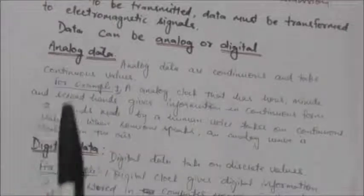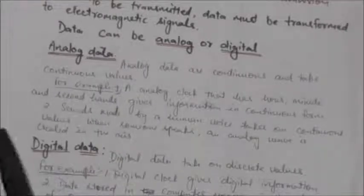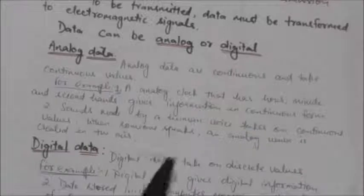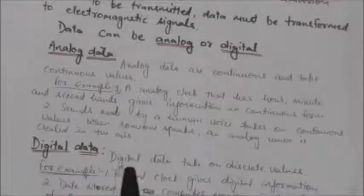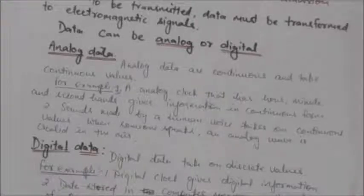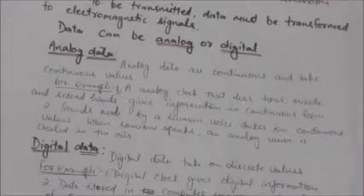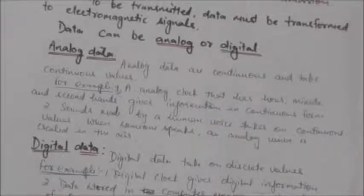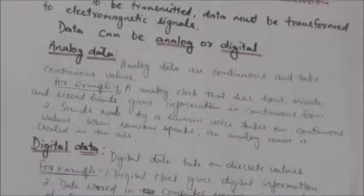Another example is the sound made by a human voice — it takes on continuous values. When someone speaks, an analog wave is created in the air, which can be captured by a microphone and converted to an analog signal, or sampled and converted to a digital signal.